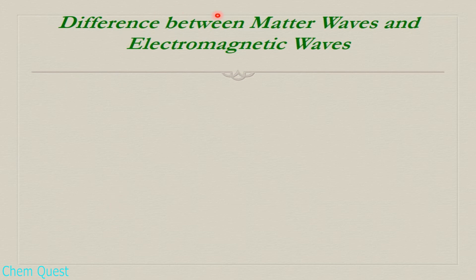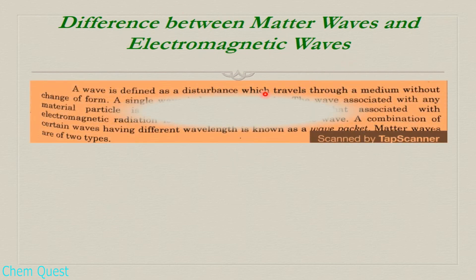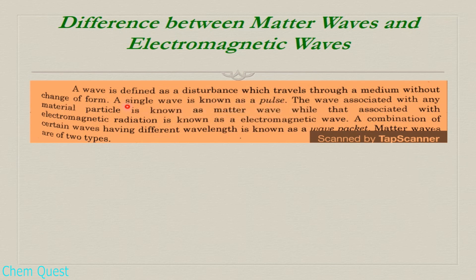The difference between matter waves and electromagnetic waves. A wave is defined as a disturbance which travels through a medium without change of form. A single wave is known as a pulse.